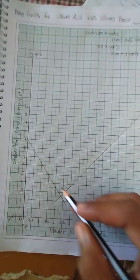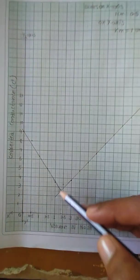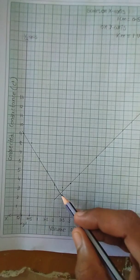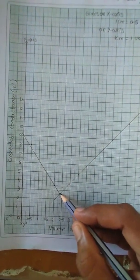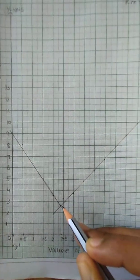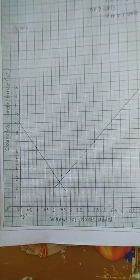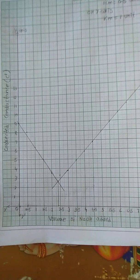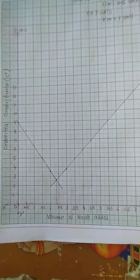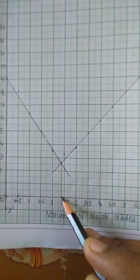The intersection of these two linear branches will give us the end point of the conductometric titration. Draw a line from this point of intersection to the x-axis. The point at which this line meets the x-axis gives the point of equivalence. Here, this is the point of equivalence.